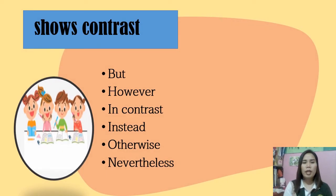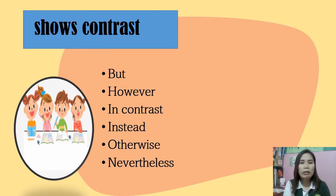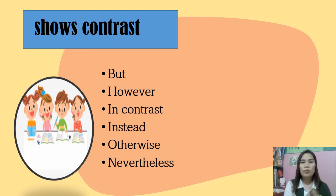Transitions that show contrast include: but, however, in contrast, instead, otherwise, and nevertheless. These transition words signal a change in the writer's direction of thought — they tell us that a new idea will be different in a significant way from the previous one, presenting evidence to the contrary or pointing out alternatives.